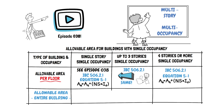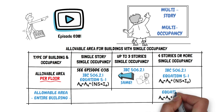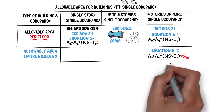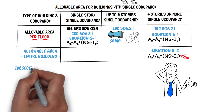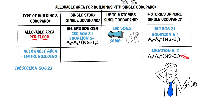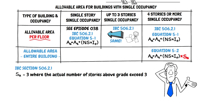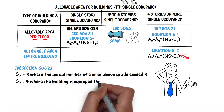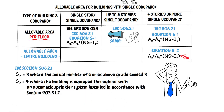What is the allowable area for the entire building? We start with Equation 5.1 — AA equals AT plus NS times IF — and note that we added SA to this equation. This equation is now Equation 5.2 in the IBC. This same section, IBC 506.2.1, tells us SA equals 3 where the actual number of stories above grade plane exceeds 3, or SA equals 4 where the building is equipped throughout with an automatic sprinkler system installed in accordance with Section 903.3.1.2.